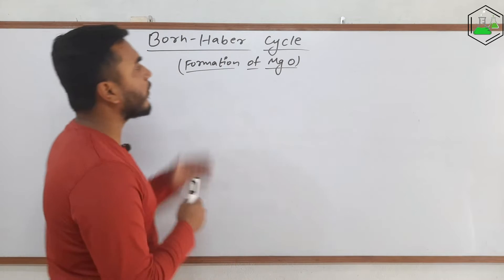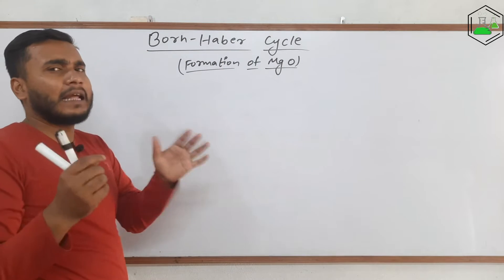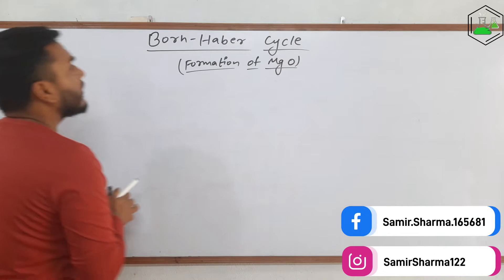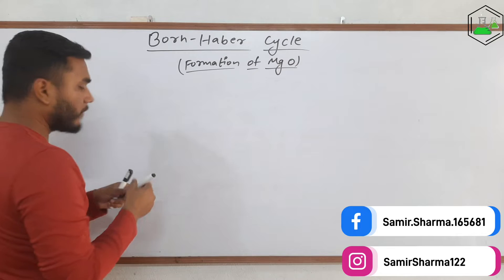The Born-Haber cycle for the formation of magnesium oxide or calcium oxide is a little bit different than the other examples. Let's see how we make the Born-Haber cycle for the formation of this compound.